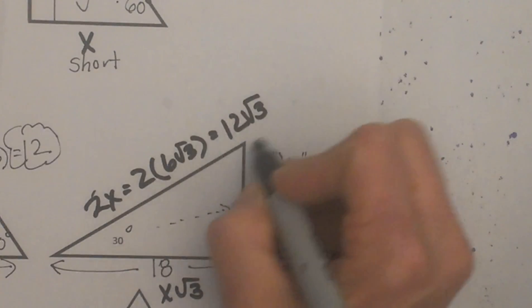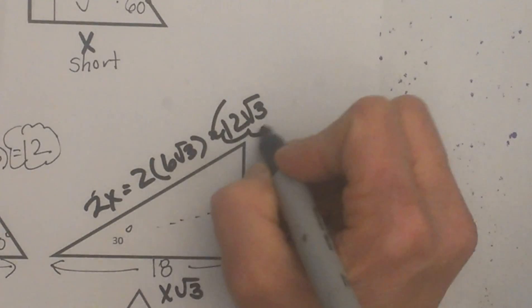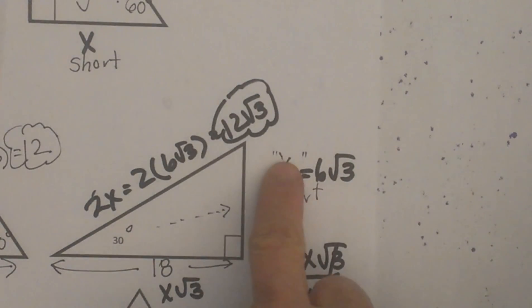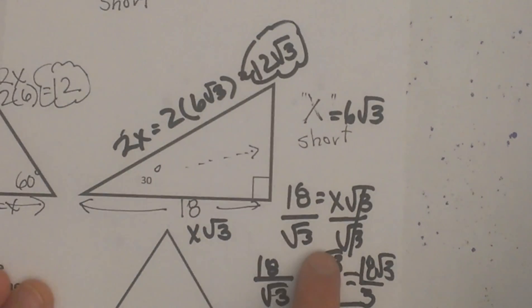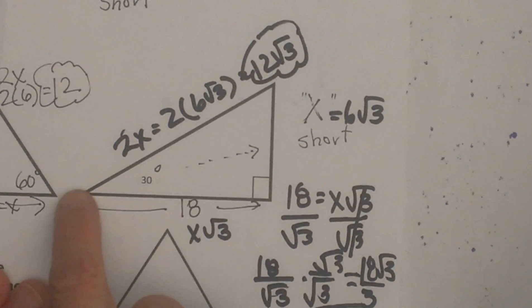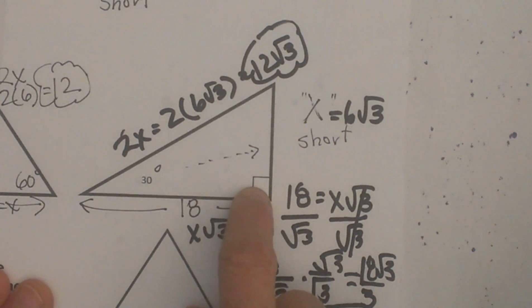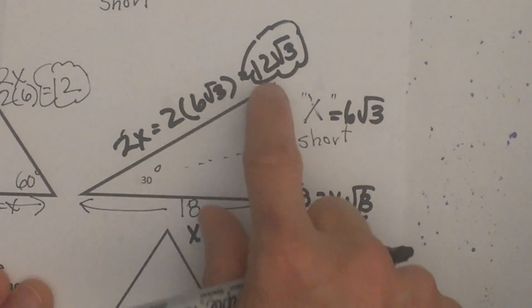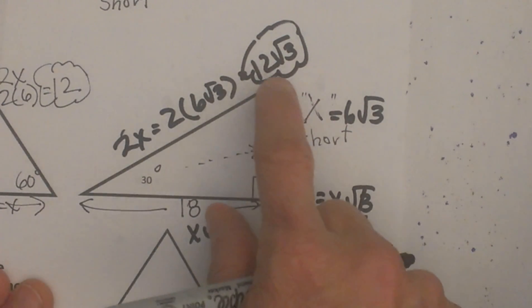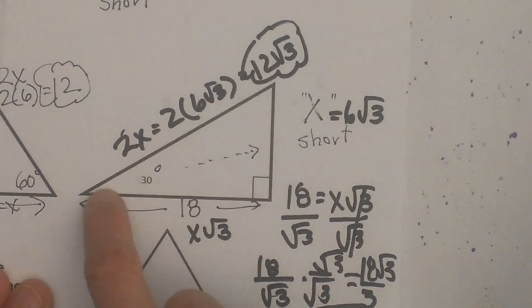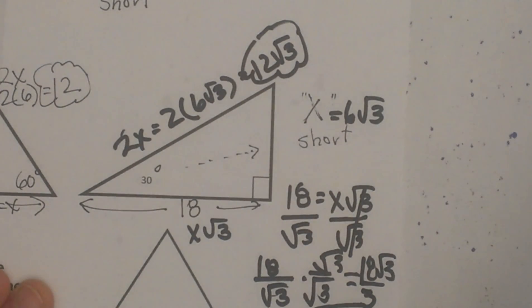That gives me 12 square root of 3 for the hypotenuse. So this triangle has a long leg of 18, a short leg of 6 square root of 3, and a hypotenuse of 12 square root of 3.